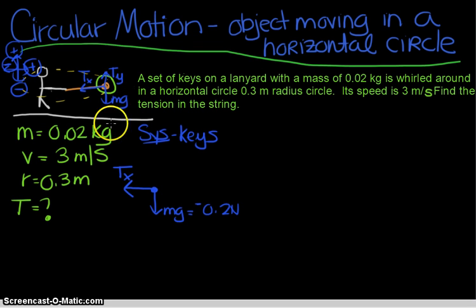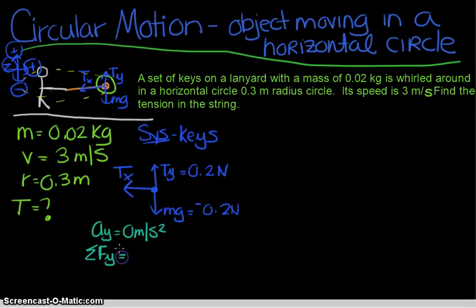So our force diagram for the keys looks like this. All right, well let's analyze this force diagram here. I know that acceleration in the Y is 0 meters per second squared, and the reason I know that is because we've done this before and we know that in terms of the Y axis there is 0 acceleration and 0 velocity for that matter.